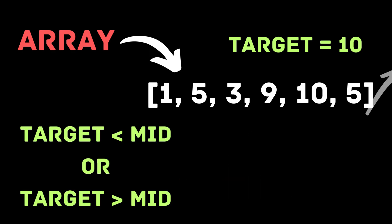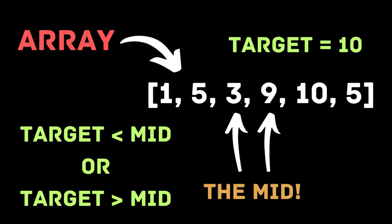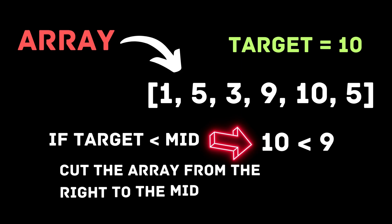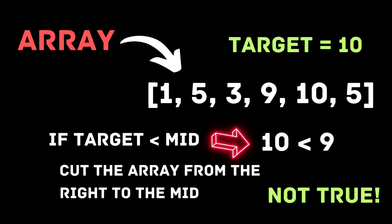We can choose the middle element, check if the target is less than or more than. If it is smaller, the element is in the left side of the array and we don't need the elements after the mid point. So we would assign the new right as mid.